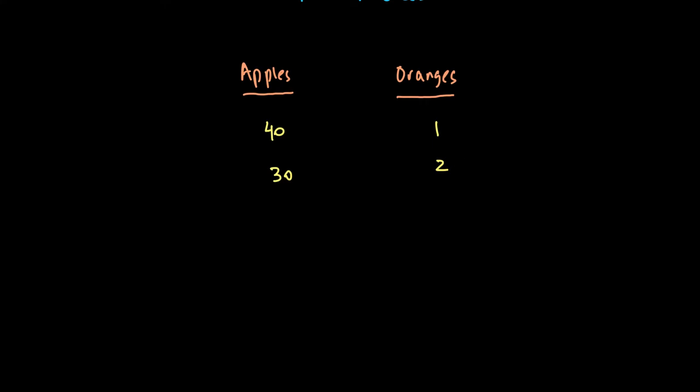Otherwise, if you give him 30 apples and 1 orange, he will say 40 and 1 is better than 30 and 1, so he would not be indifferent. In order to keep him indifferent — that is, at the same utility, which we don't know the exact value of, but assume to be equal — we give him 30 apples and 2 oranges. Similarly, if we reduce apples from 30 to 22, he will say you've reduced apples by 8, so give me one more orange to remain indifferent. We can call these combinations A, B, and C — he is indifferent among all three.